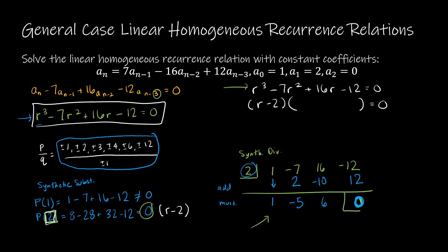So once I divide the polynomial by (r − 2), I end up with r² − 5r + 6 = 0. The degree drops by one from 3 to 2.